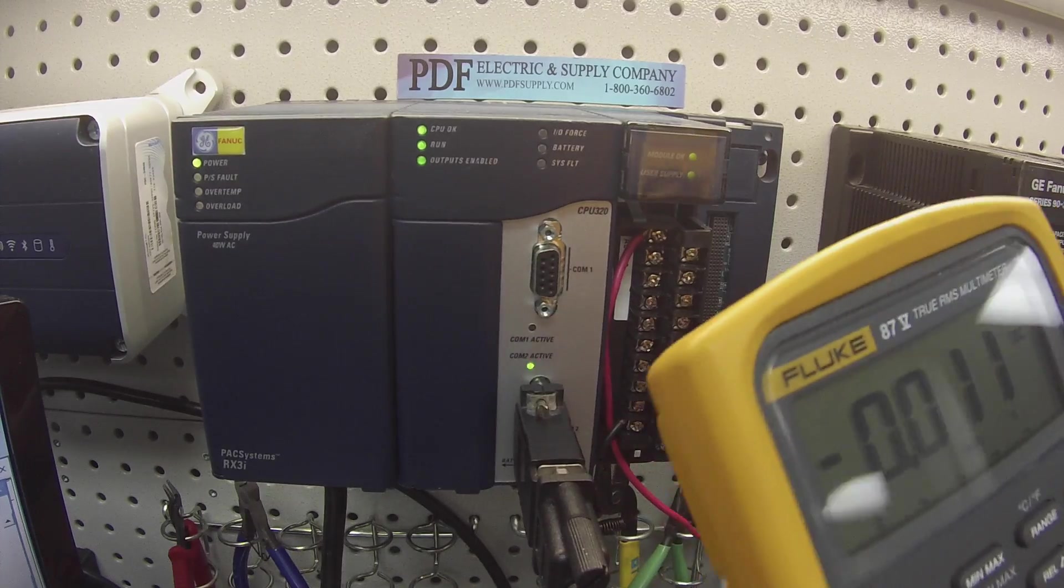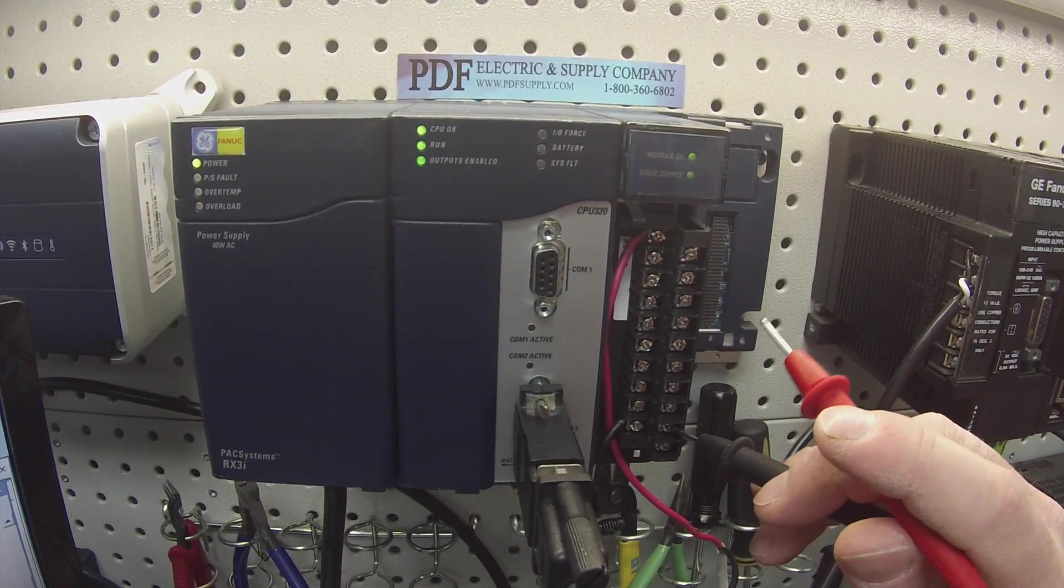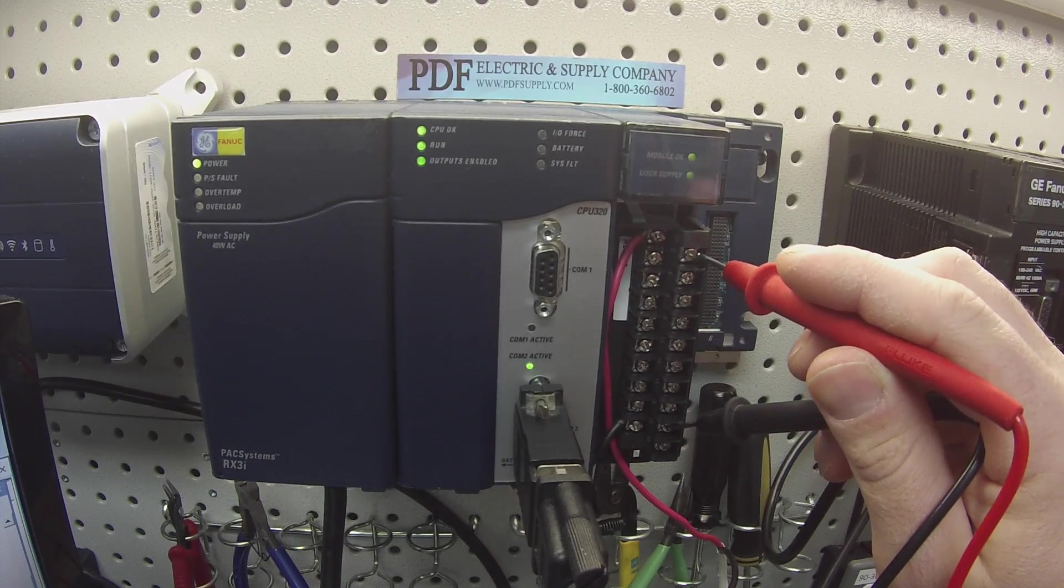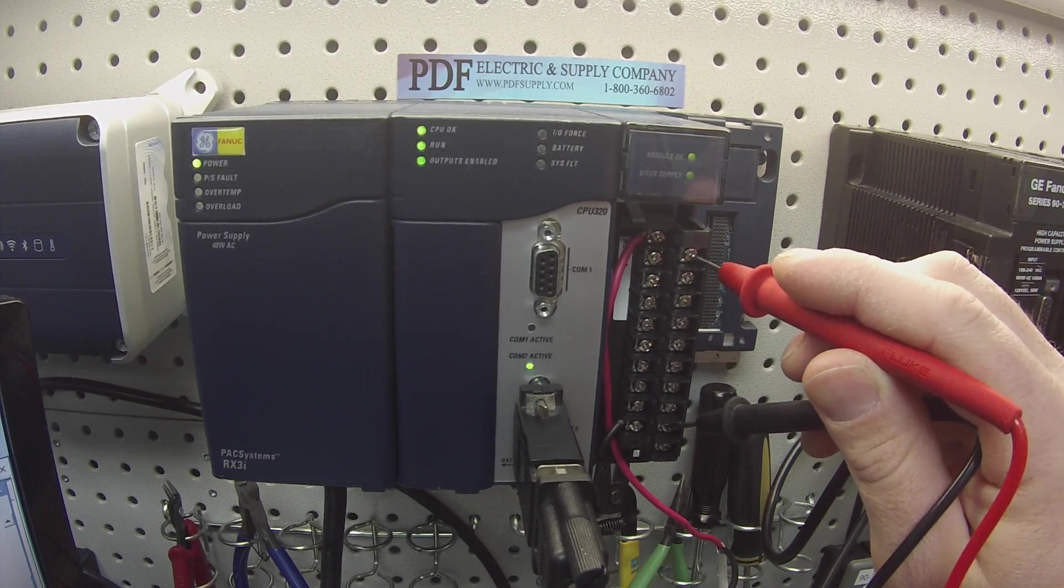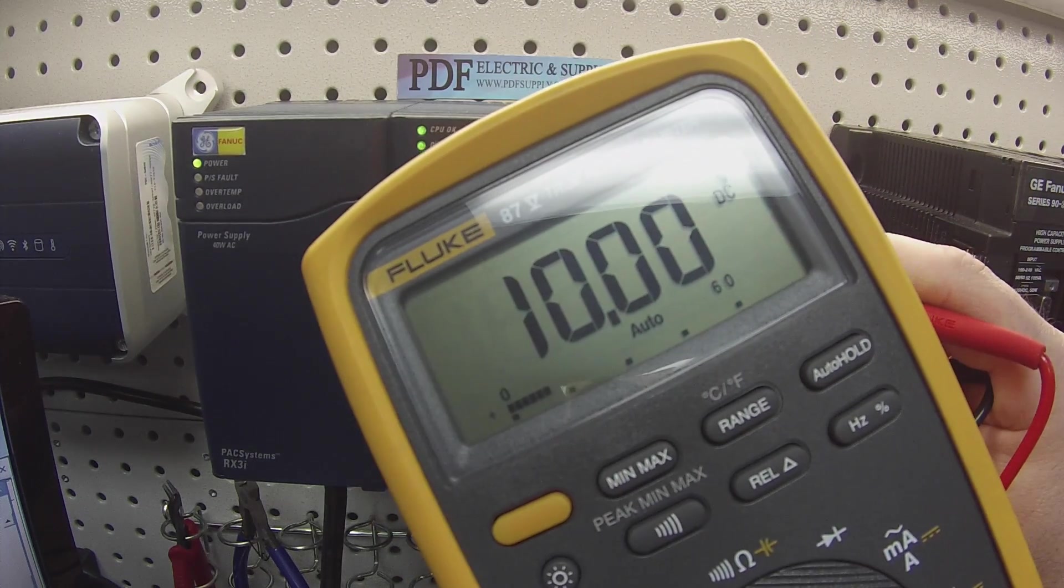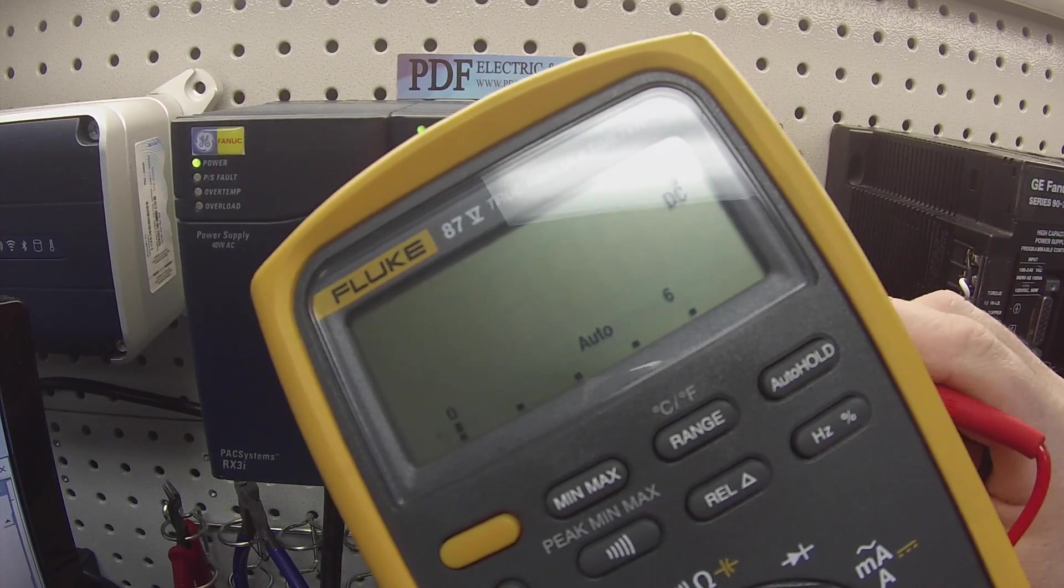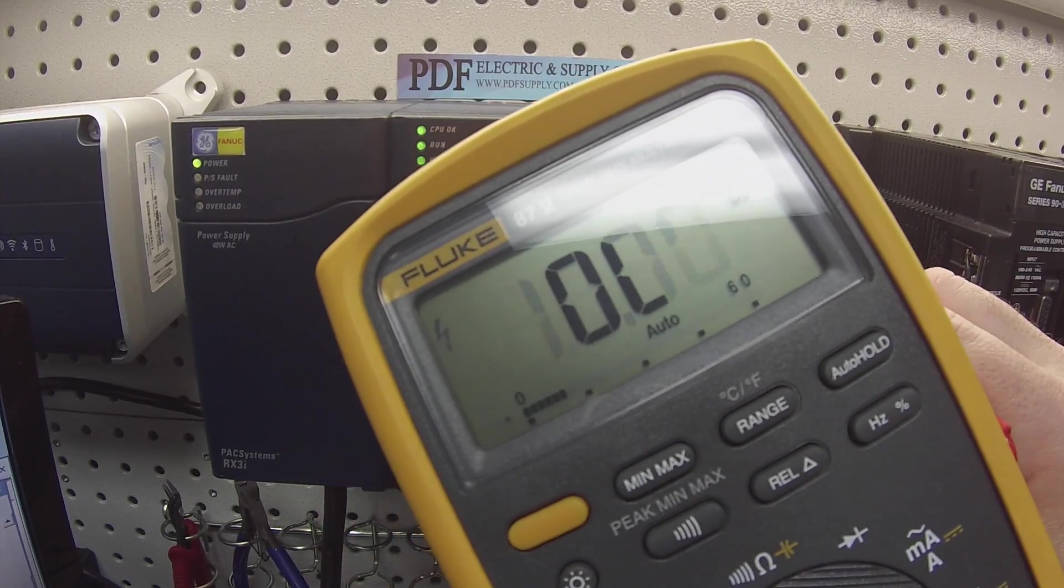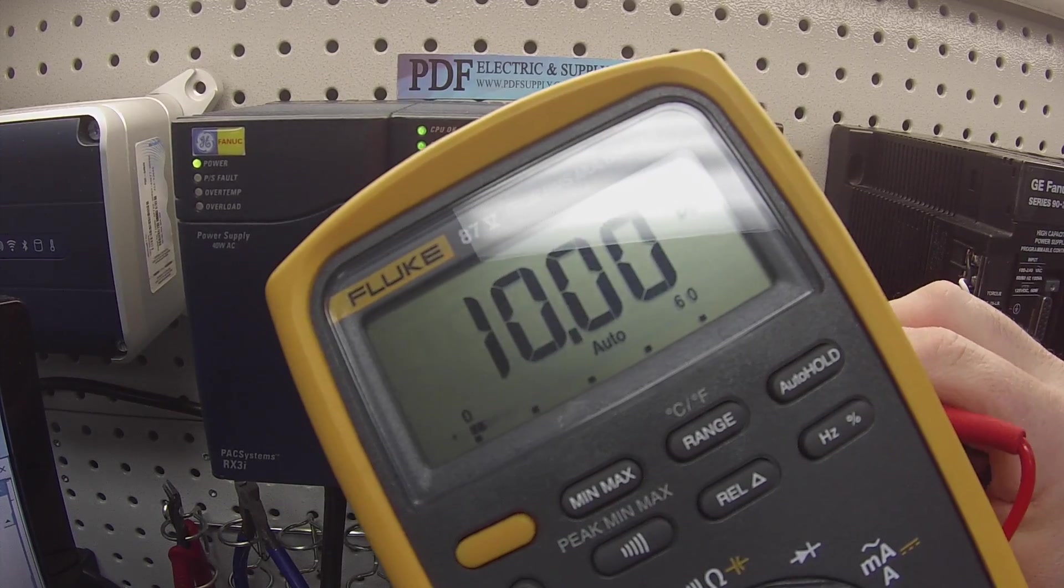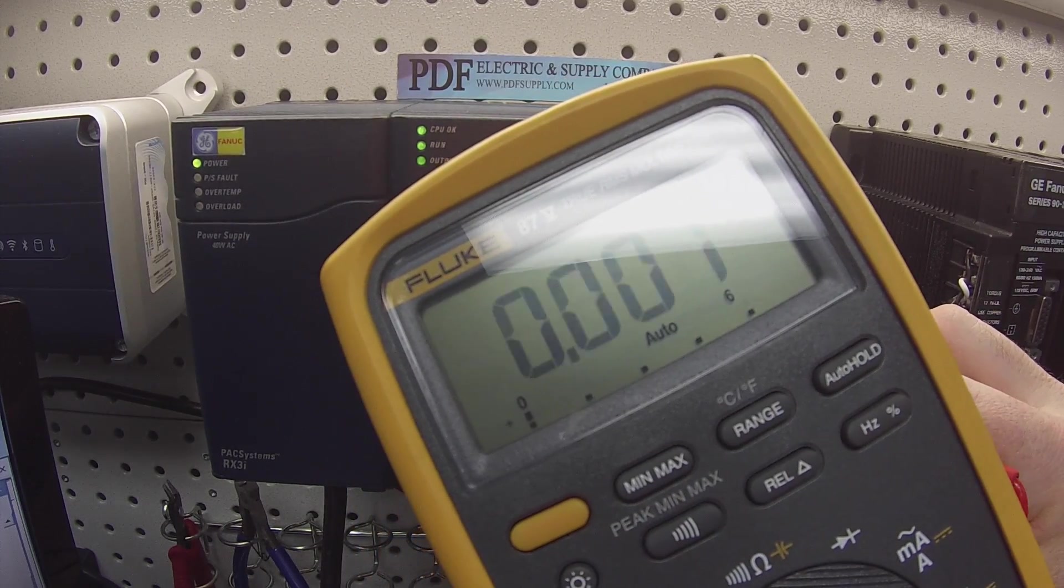If you guys are able to see my multimeter, the first thing I'm going to do is connect to my 18 and touch my positive probe to the first channel, first output channel, terminal two. Now, as you guys can see, I have 10 volts. Second channel, 10 volts. Third channel, 10 volts. Fourth, fifth, seventh, and eighth.